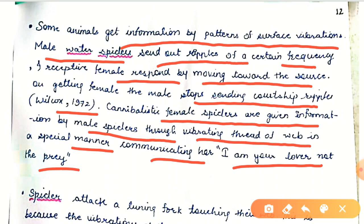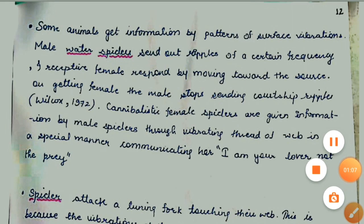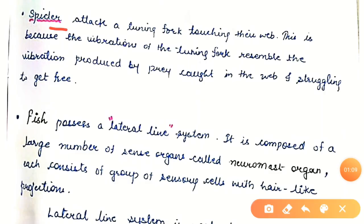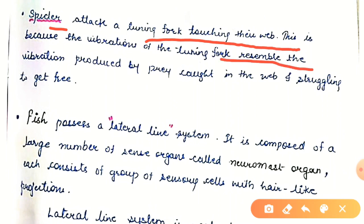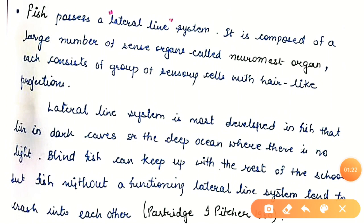Spiders will attack a tuning fork touching their web because the vibrations of the tuning fork resemble the vibration produced by prey caught in the web and struggling to get free. Fish also possesses a lateral line system — it is composed of a large number of sense organs called neuromast organs, each consisting of a group of sensory cells with hair-like projections.